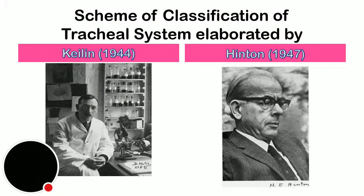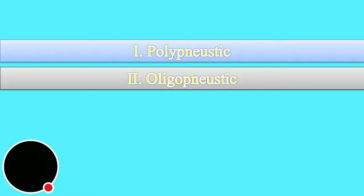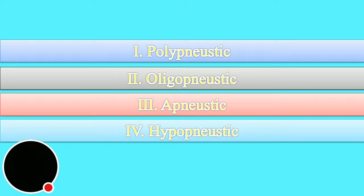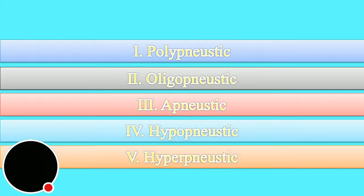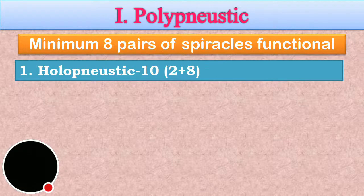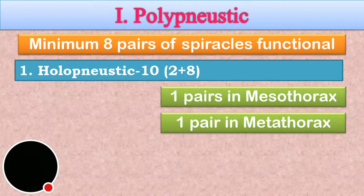This classification was elaborated by Kellyn and Hinton, based on the number and location of functional spiracles. The classification is done as holonoistic, oligonoistic, heminoistic, hyponoistic, and hypernoistic. In holonoistic, a minimum of eight pairs are functional — meaning all 10 are functional — two plus eight, one from mesothorax and one from metathoracic segments, and eight from abdomen.